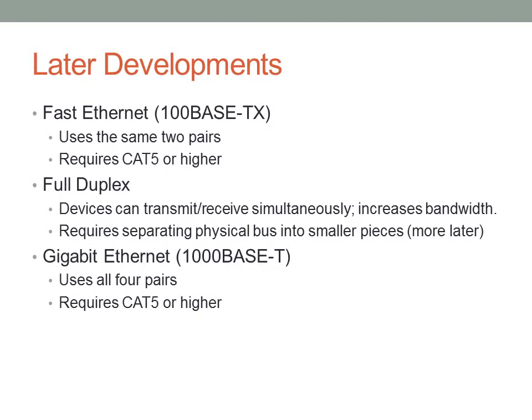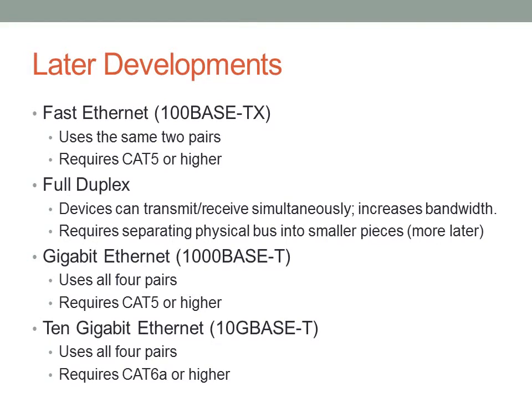Gigabit Ethernet — 1000BaseT — uses all four pairs. There was another standard called 1000BaseTX that used two pairs much like 100BaseTX did, but it required CAT6 or higher cable. Because of the expense of CAT6 and the fact that many people already had CAT5 in place, 1000BaseTX was very unpopular and didn't take off — 1000BaseT ended up winning, though it requires all four pairs. Finally, 10 Gigabit Ethernet takes Gigabit Ethernet and raises the frequency, so with that increase in frequency we need CAT6A or higher cable.